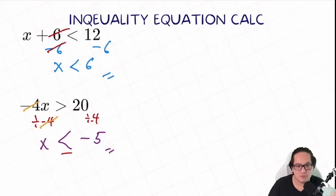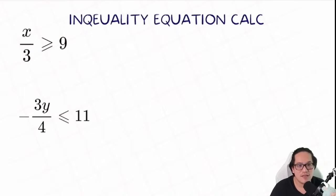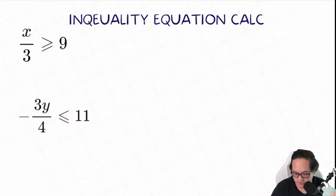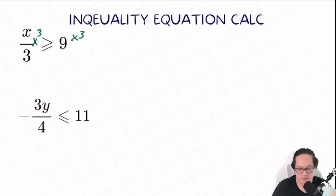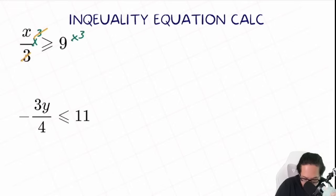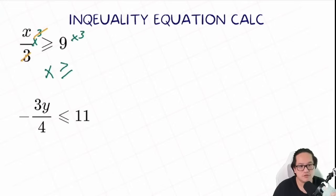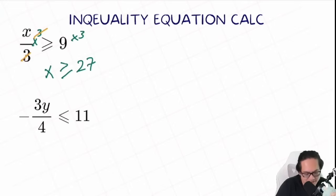So let's do a couple more practice questions. Now we have x over 3 larger or equal to 9. What do we need to do here to isolate x? We need to multiply 3 on both sides. So this 3 on the left will get canceled out. x will get isolated, larger or equal to 9 multiplied by 3, equal to 27.